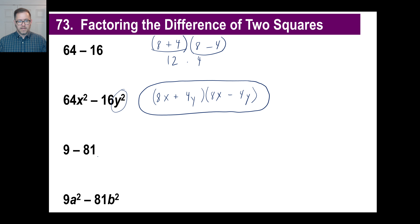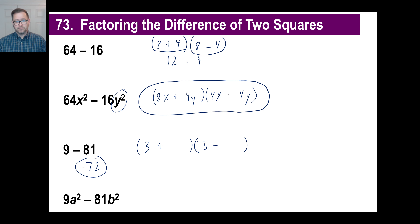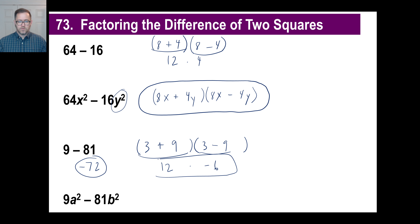Here's a weird one: 9 minus 81. Using regular math, that's 81 minus 9 equals 72, but with a negative, so negative 72. We do the same thing — break it up into two binomials. The square root of 9 is 3; put it twice with a plus and a minus. The square root of 81 is 9. So 3 plus 9 is 12, and 3 minus 9 is negative 6. 12 times negative 6 equals negative 72.